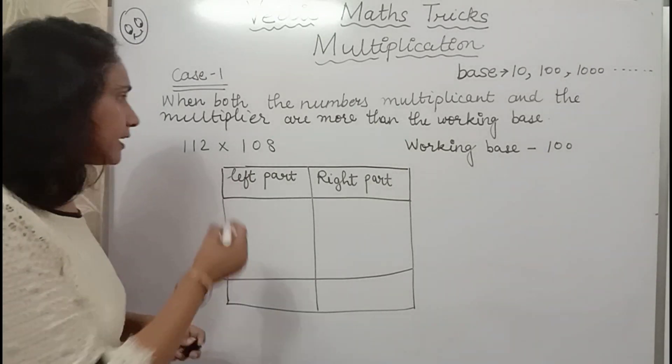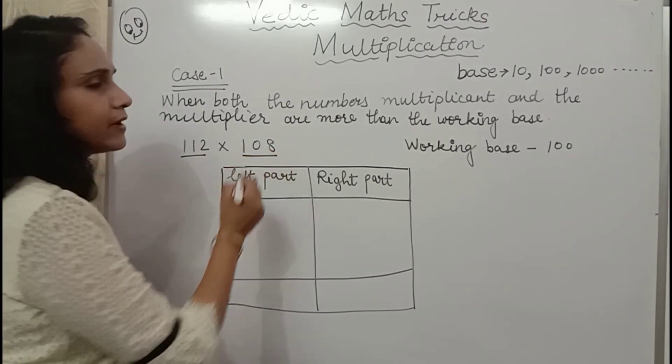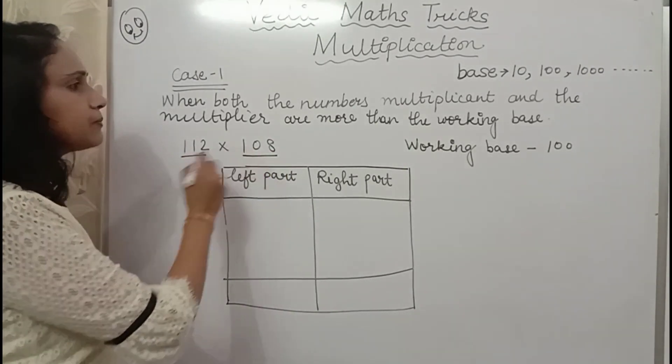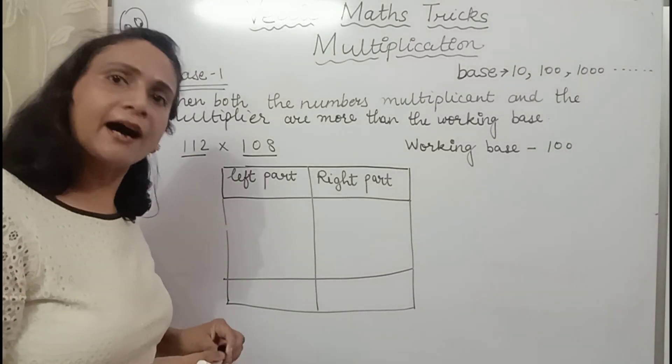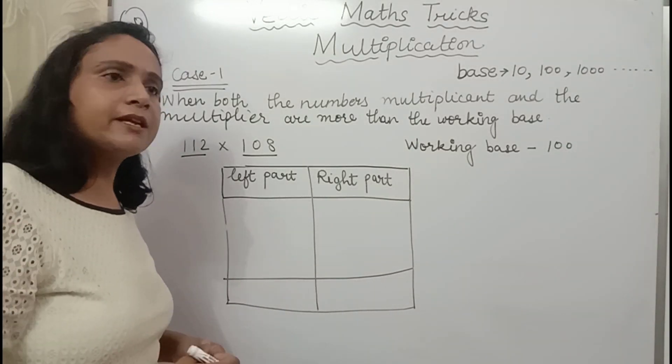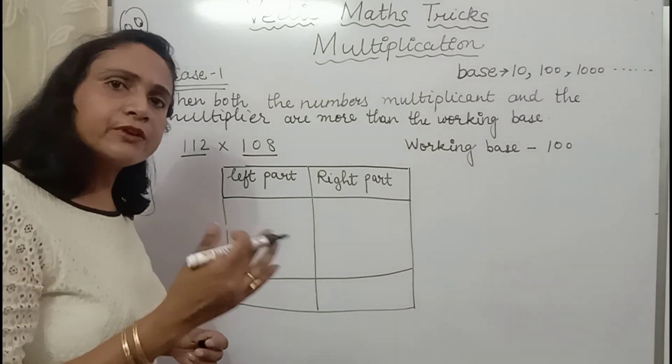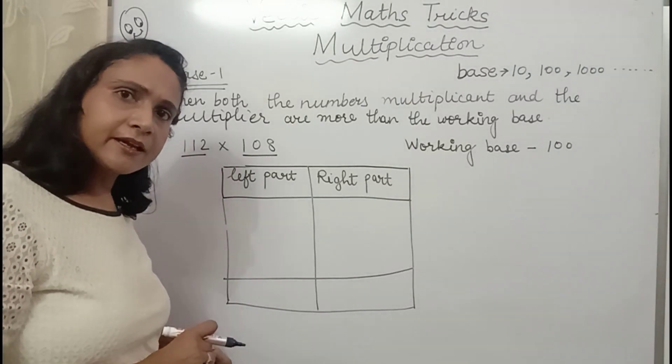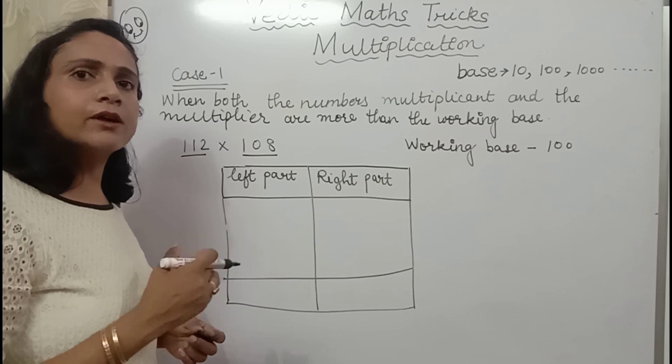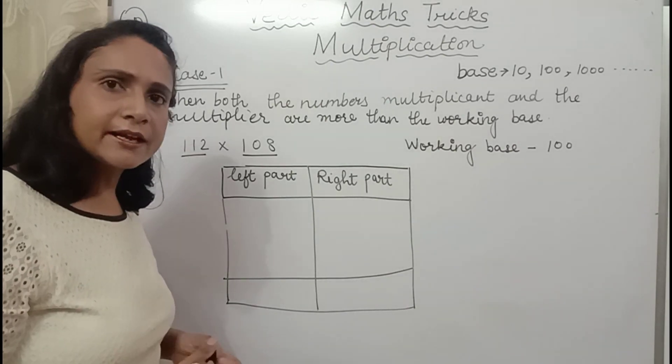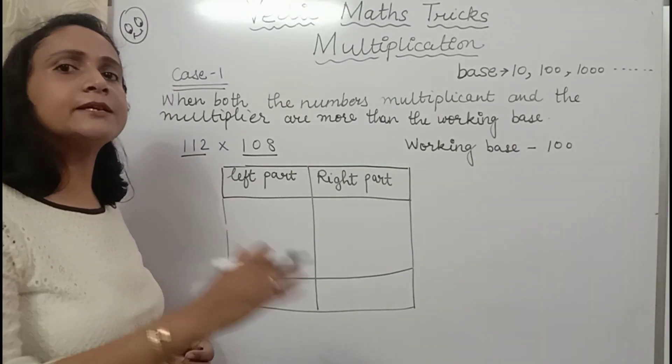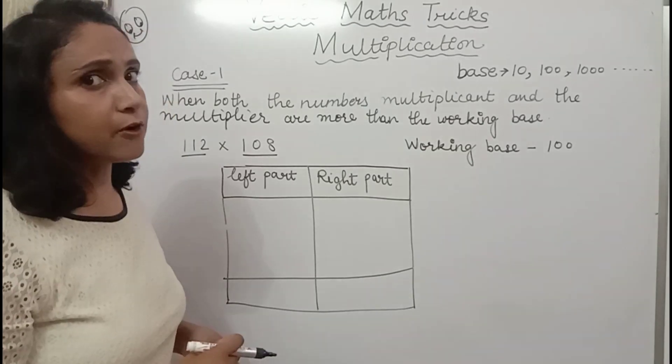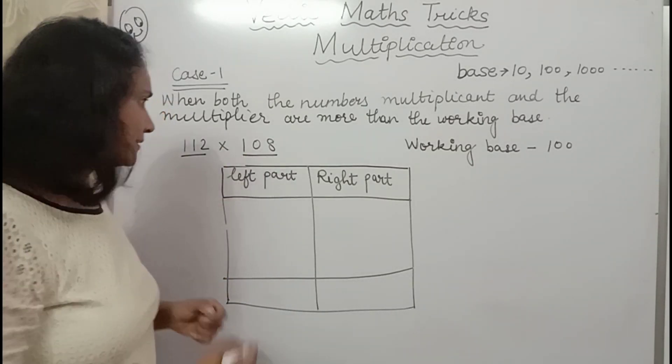Here I have taken 112 multiplied by 108. If you see both the numbers their working base is 100. You must be thinking, if different working bases are there, then what to do? If numbers are lesser than 100 or 1000 of working base, then what to do? So I will be teaching all these in my next videos. So keep watching. Now let's see this.